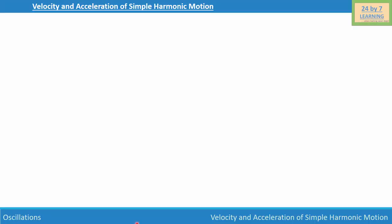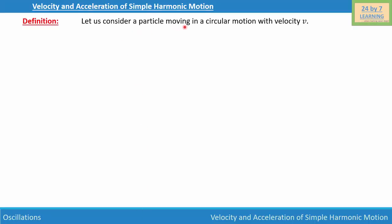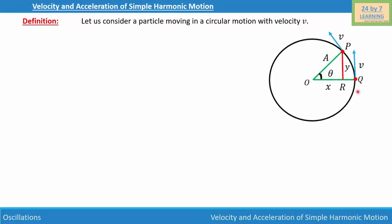Velocity and acceleration of simple harmonic motion. Let us consider a particle moving in circular motion with velocity v. I am going to consider a diagram where you can see a particle is moving with velocity v, and there are two different positions of the particle that we are considering — positions Q and P.